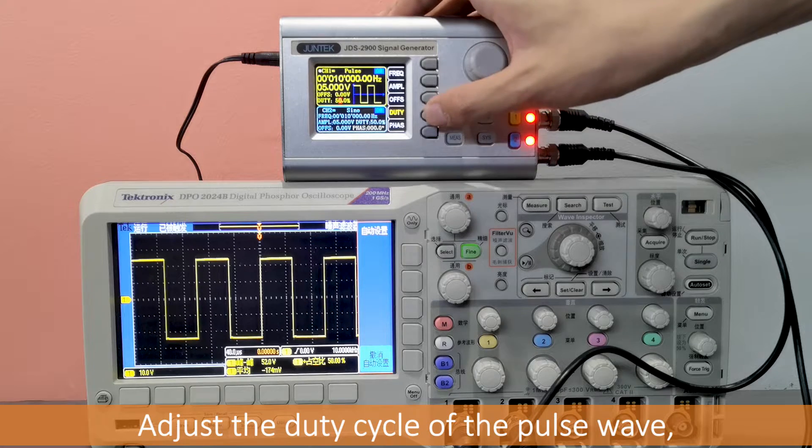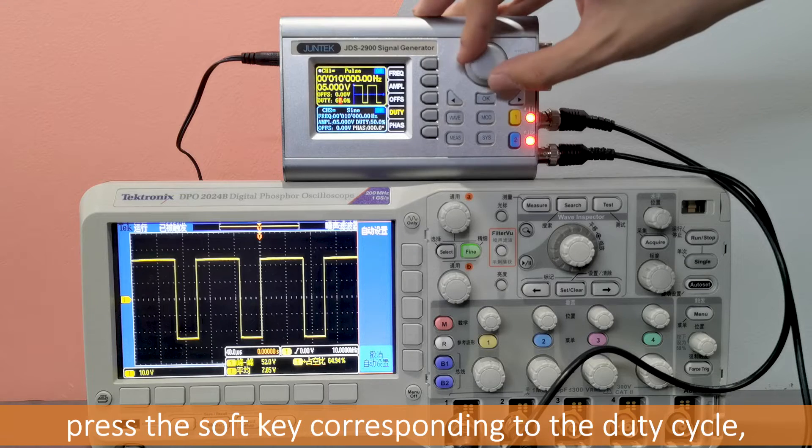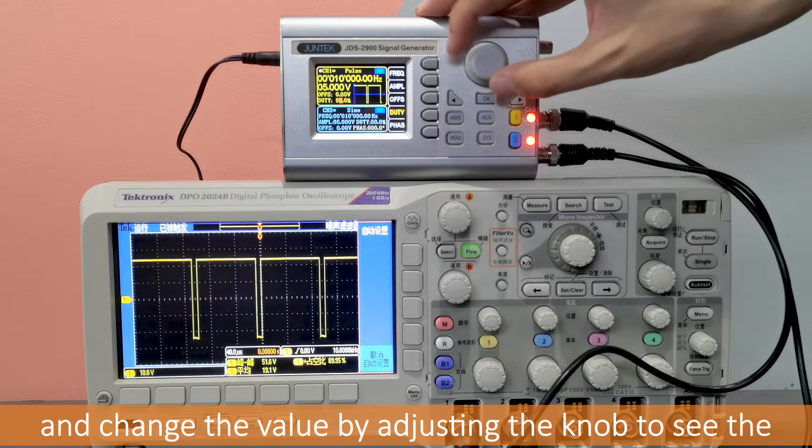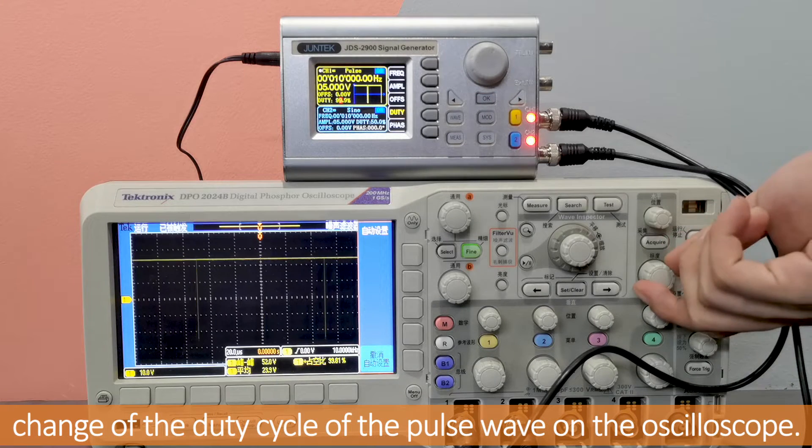Adjust the duty cycle of the pulse wave. Switch the waveform to the pulse wave, press the soft key corresponding to the duty cycle, and change the value by adjusting the knob to see the change of the duty cycle of the pulse wave on the oscilloscope.